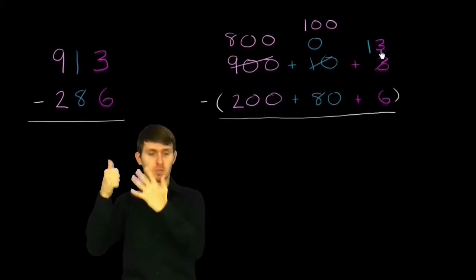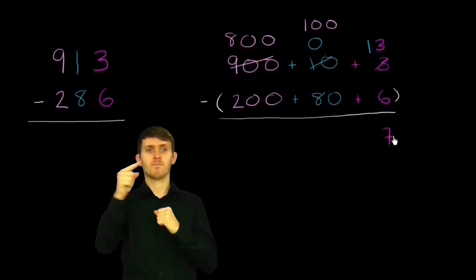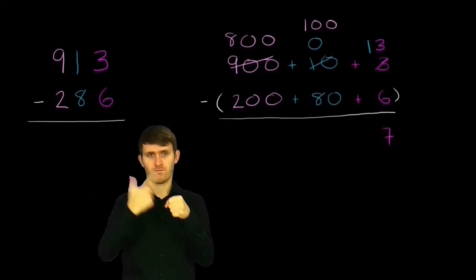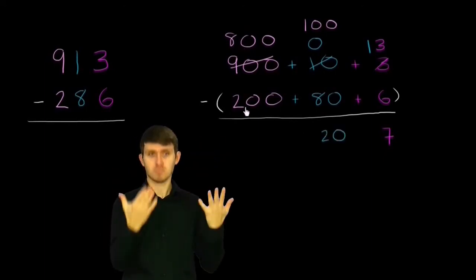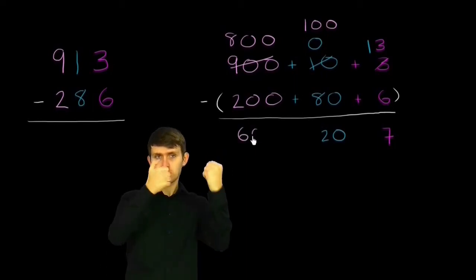So let's do it. 13 minus 6 is 7. 100 minus 80 is 20. 800 minus 200 is 600.